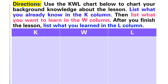Before we start the lesson I would like you to complete this table. First, complete the K column — K stands for what you already know about today's lesson, that is nouns. Write everything you know about nouns here. The W column stands for what you want to learn about this lesson — your questions, whatever you would like to learn. Finally, the L column stands for what you've learned in this lesson. I ask you not to write anything in it until the end of the lesson, then complete it with the information you learned.